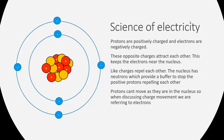Let's zoom in on the basics of electricity and what makes something charged. Protons are positively charged and electrons are negatively charged — we've talked about protons and electrons since around year seven or eight. We know that opposite charges attract each other; this is what keeps the electrons near the nucleus.